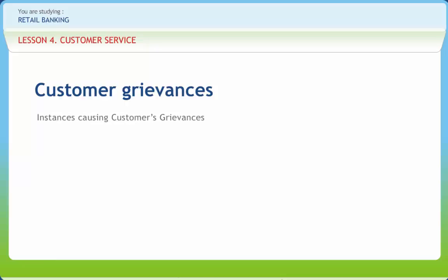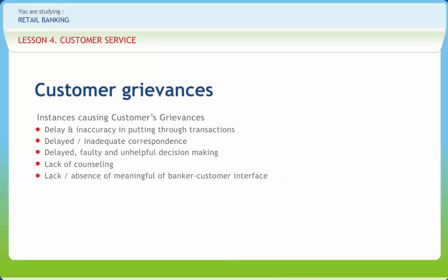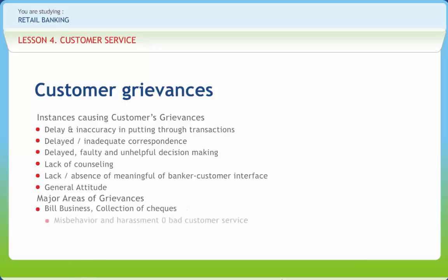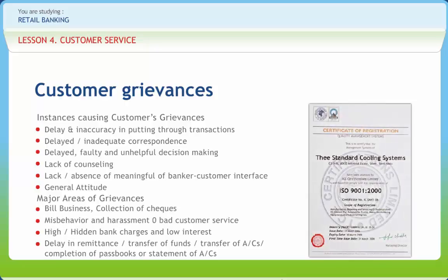(4) Instances causing customer grievance are: delay and inaccuracy in putting through transactions, delayed or inadequate correspondence, delayed, faulty, and unhelpful decision making. (5) Lack of counseling, lack or absence of meaningful banker-customer interface and general attitude. Major areas of grievances are: bill business, collection of checks, misbehavior and harassment, bad customer service, high or hidden bank charges, low interest, delay in remittance or transfer of funds or transfer of accounts, and completion of passbooks or statement of accounts.